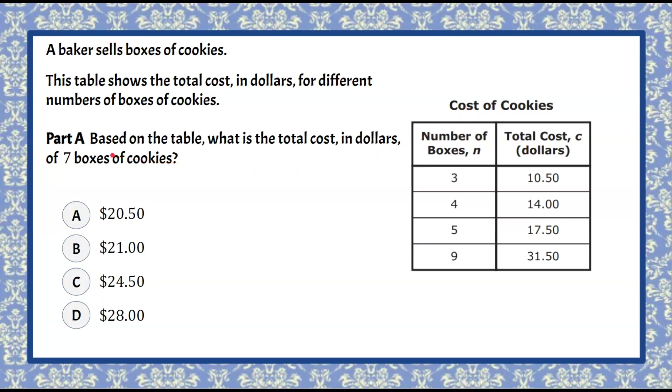Here's your Part A. This is a two-part question. Part A says, based on the table, what is the total cost in dollars of seven boxes of cookies? I'd like you to pause here, find the total cost of seven boxes of cookies. You have four answer choices, then come back and hit play.